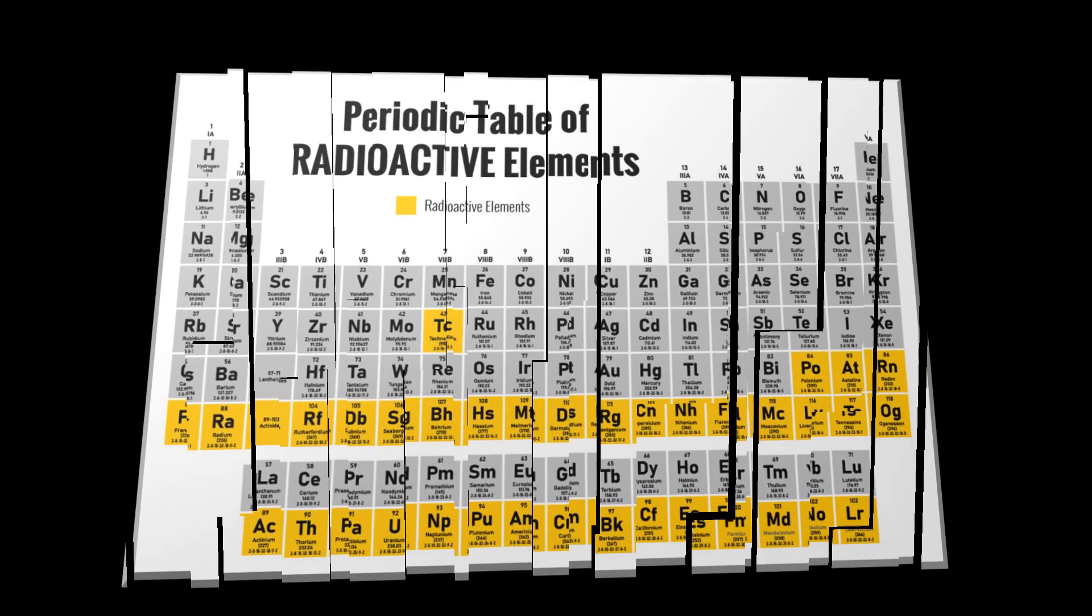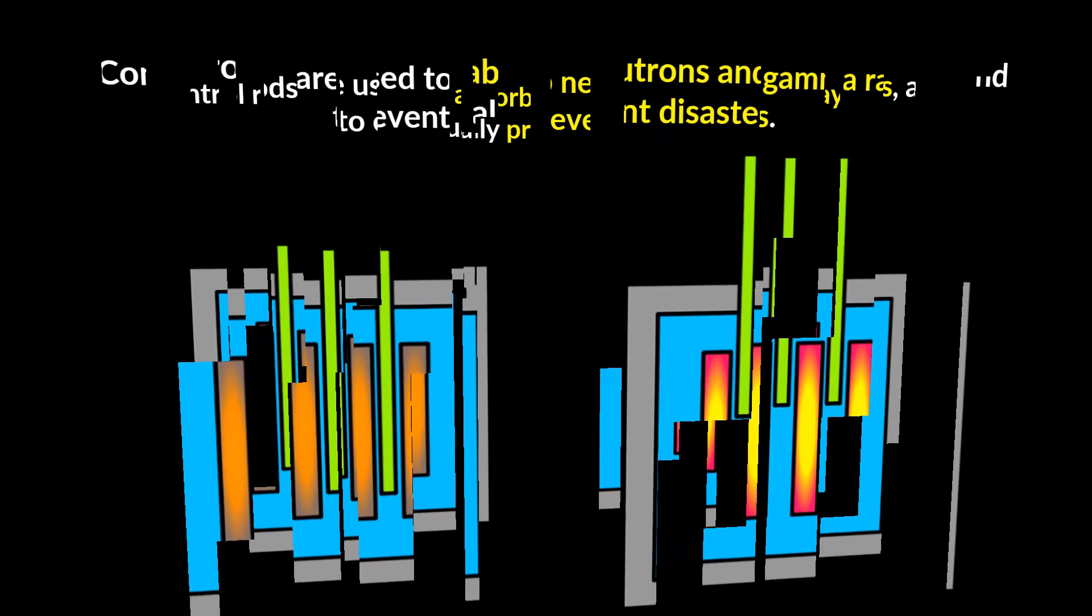Also, to prevent disasters from happening, graphite control rods are used, as you can see in this diagram. It absorbs neutrons and gamma rays, reducing and eventually preventing the rate of fission. This is so that extra energy is not produced which may lead to deadly explosions.